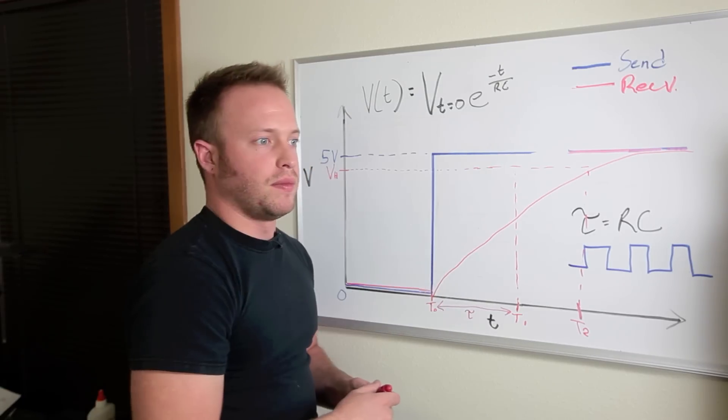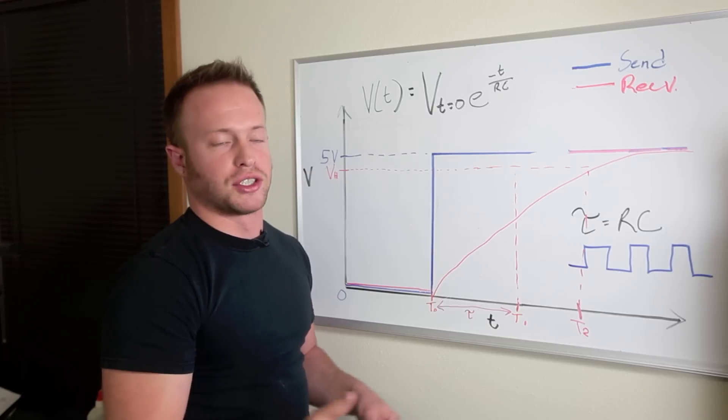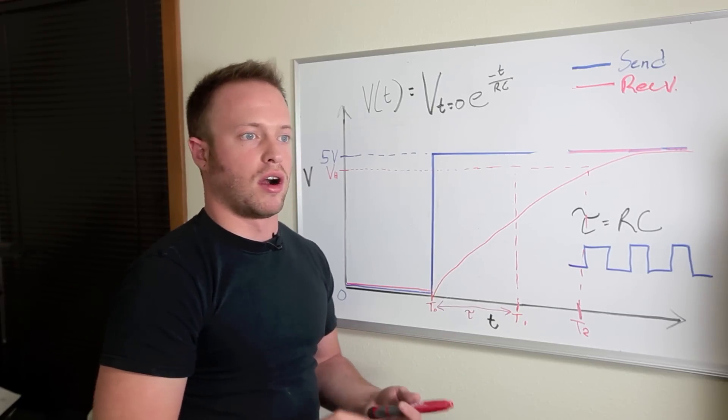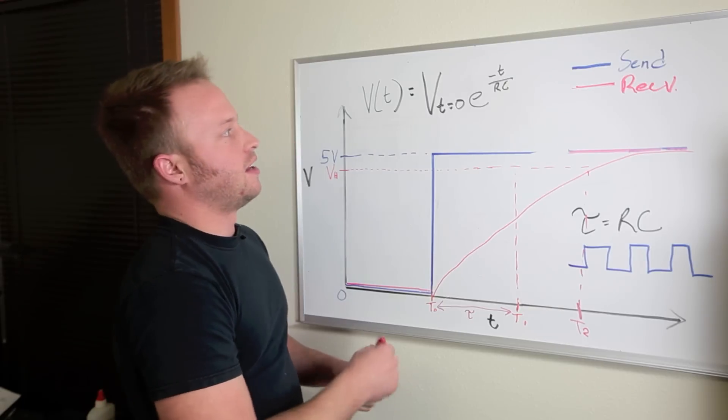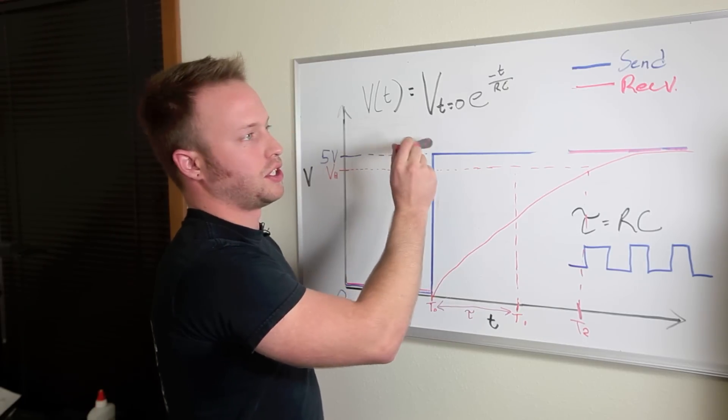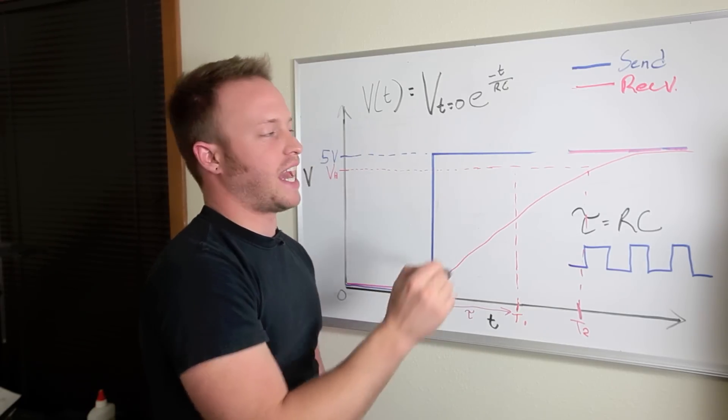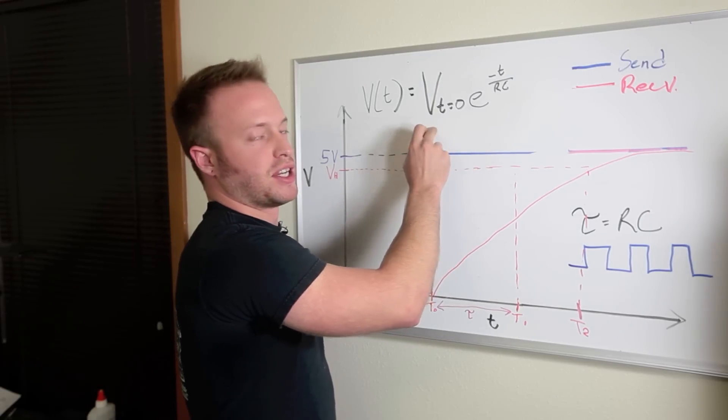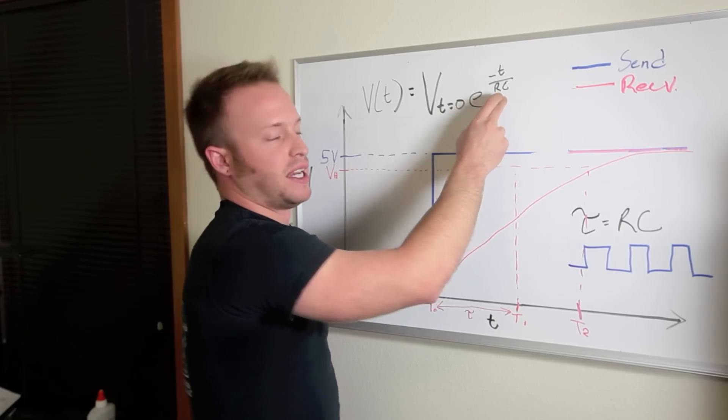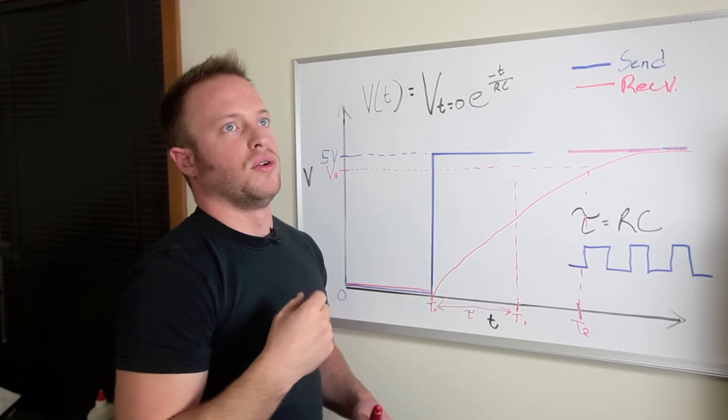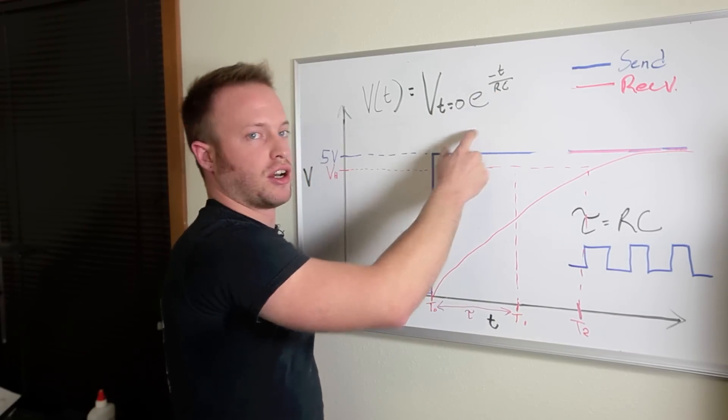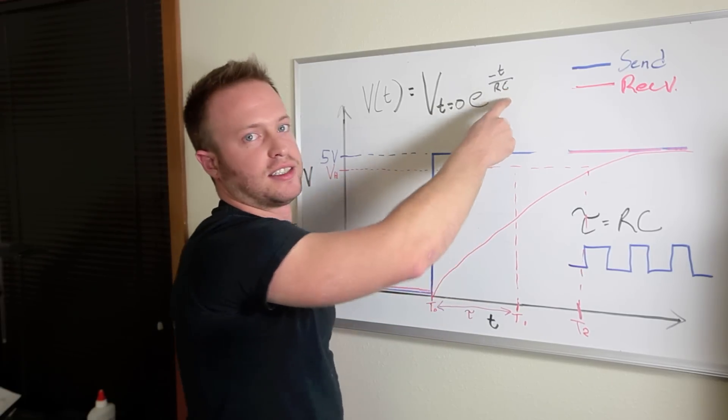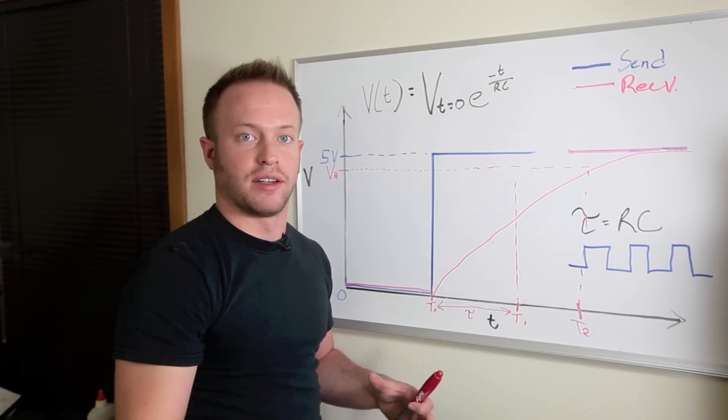And for those of you that are interested, the Wikipedia page on this is great. Just go look up RC circuit or RC time constant and you can find this, which is the equation for exponential decay of an RC circuit. And you can actually see and predict what the voltage is going to be based on your resistance and capacitance. If you watch the voltage change on an oscilloscope, you can actually derive the capacitance of the element that you're trying to measure.